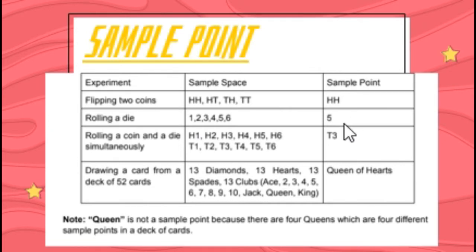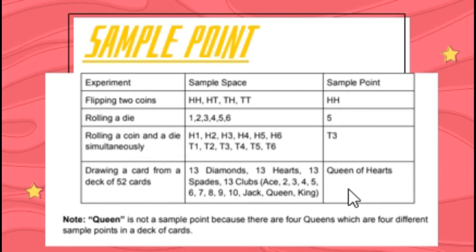Sample points are just one of the possible outcomes. For flipping two coins, an example sample point is head and head. For rolling a die, a sample point is five. For rolling a coin and a die simultaneously, a sample point is tail and 3. For drawing a card, a sample point is the queen of hearts. Note: queen alone is not a sample point because there are four queens, which are four different sample points in a deck of cards.